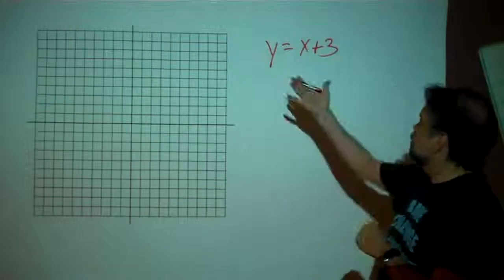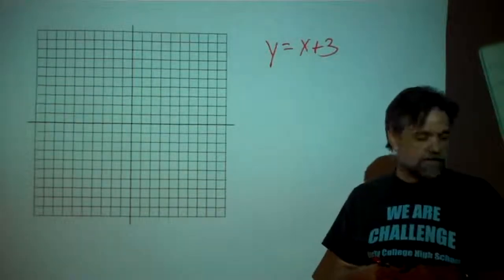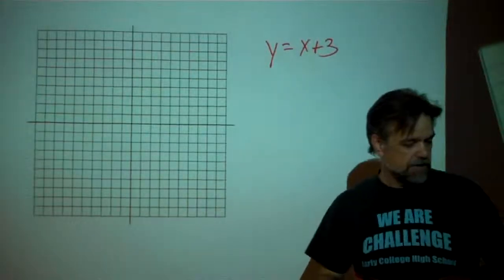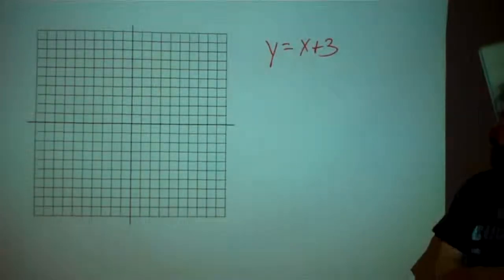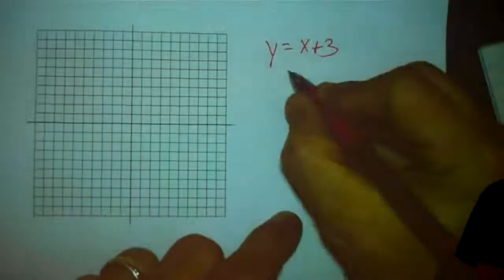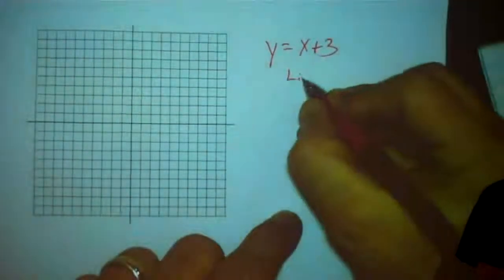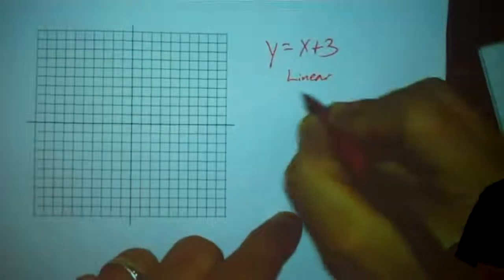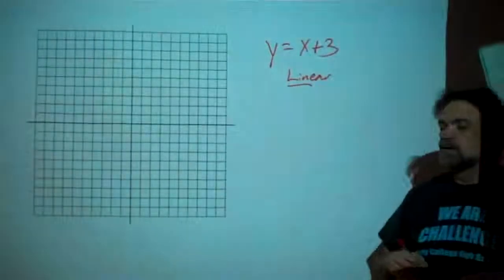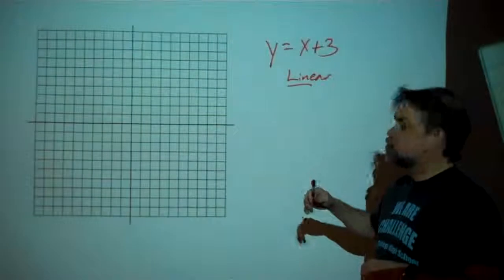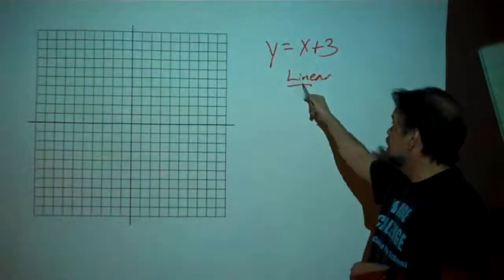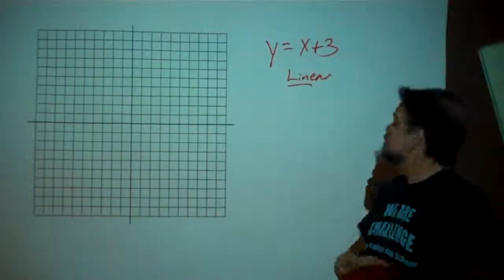Here we have a linear equation. This is called a linear equation because, if you look at the word linear, you'll see that it includes the word 'line' in there. And when we graph this equation, as you'll see, it's going to look like a line.